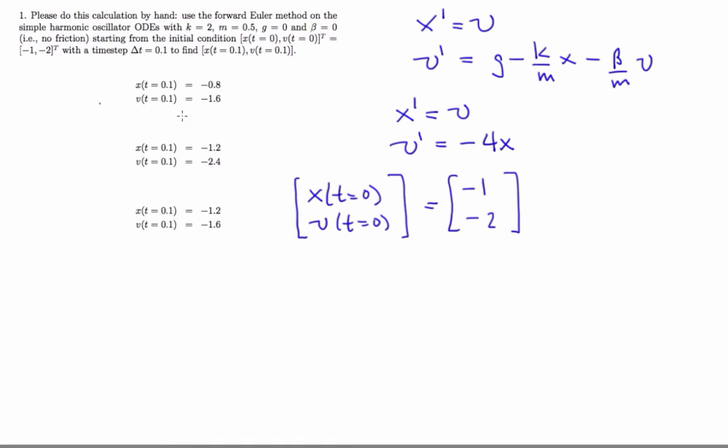By the way, this transpose notation means take a row vector and make it a column vector. It can also mean take a column vector and make it a row vector. Now recall,